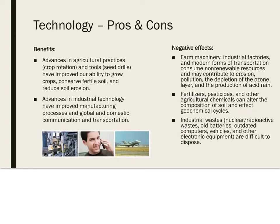There are pros and cons — benefits and negative effects — of technology. Some benefits: advances in agricultural practices like crop rotation and advances in tools like seed drills have improved our ability to grow crops, conserve fertile soil, and reduce soil erosion. Also, advances in industrial technology have improved manufacturing processes and global and domestic communication and transportation.